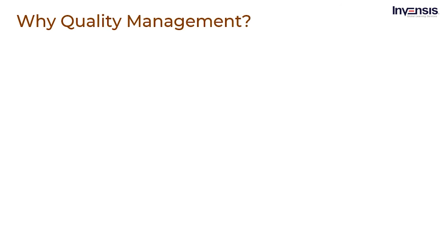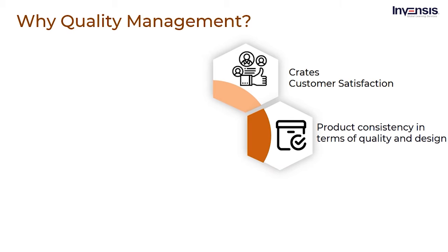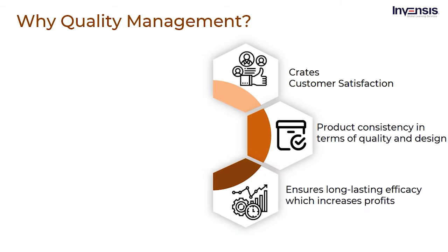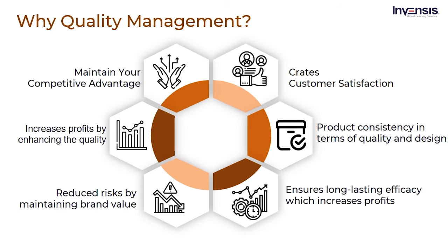Enterprises around the world are prioritizing themselves to provide quality goods. Today's customers have a huge number of options in front of them, and only if the organization has quality goods will customers choose them. Hence, quality through continuous improvements is a vital role for many organizations. The checklist of why quality management is important includes: creates customer satisfaction, product consistency in terms of quality and design, ensures long-lasting efficiency, reduces risks, increases profits, and maintains the competitive advantage.